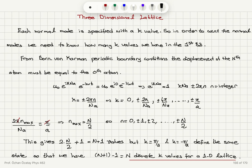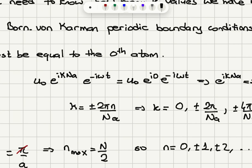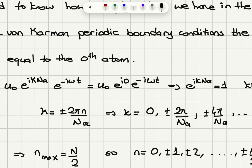Generalizing to the three-dimensional lattice: each normal mode is specified by a k value. To count the normal modes, we need to know how many k values exist in the first Brillouin zone. From Born–von Karman periodic boundary conditions, the displacement of the Nth atom equals the displacement of the zeroth atom. Setting the displacement of the Nth atom u0 e to the ikNa e to the minus i omega t equal to the zeroth atom's displacement, e to the minus i omega t cancels.